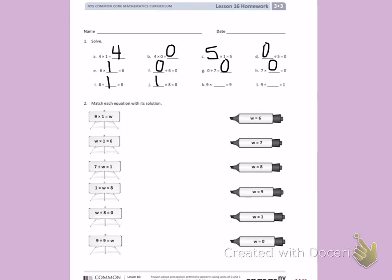K, 9 times blank equals 9. Anything times 1 equals itself. L, 9 divided by blank equals 1. So in this case I have the same as saying 1 times 9 equals blank. Anything times 1 equals itself. My missing number is 9.